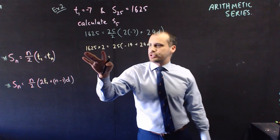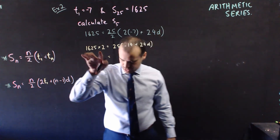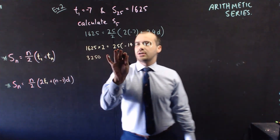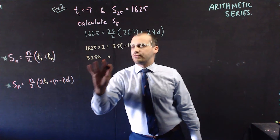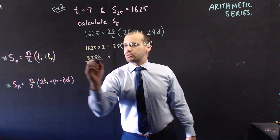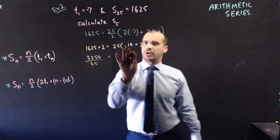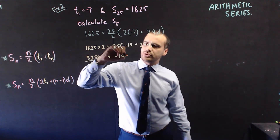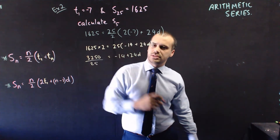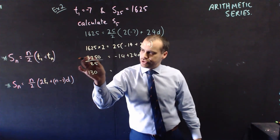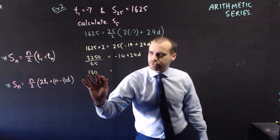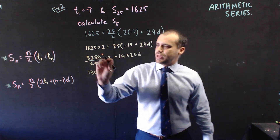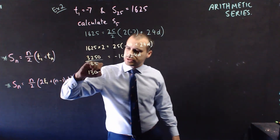Now we just rearrange that algebra so we can find the value of D. My first step is to multiply by 2, which will give me 3250. I can also divide by that 25. And what I'm left with on this side is negative 14 plus 24D. Now, 3250 divided by 25 is 130.